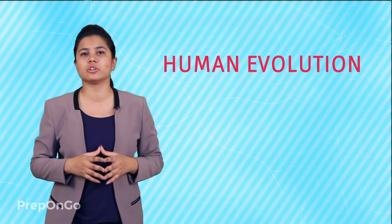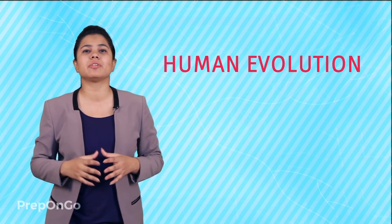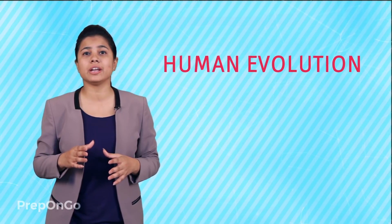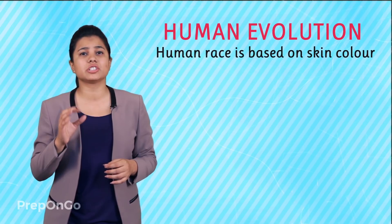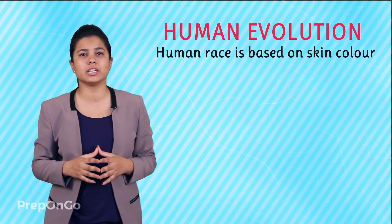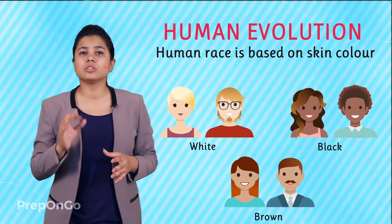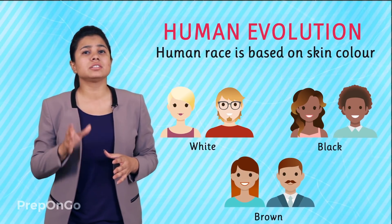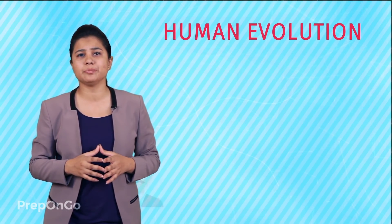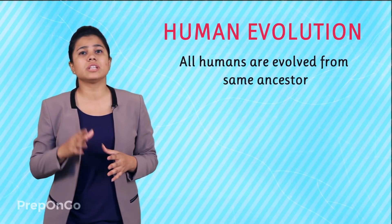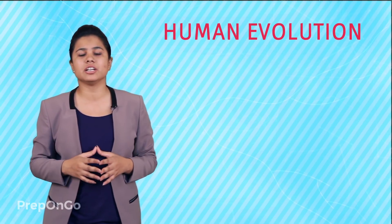Let's talk some more about the evolution of humans. A lot of different kinds of humans can be found on earth, and the diversity is so much that for a long time people talked about human races. This differentiation was on the basis of skin color — some were called white, some black, and some brown. The question arises: do these different human races tell us that they have evolved differently? Studies show that all humans have evolved from the same ancestors and are a single species.